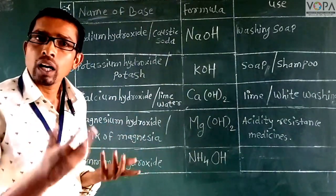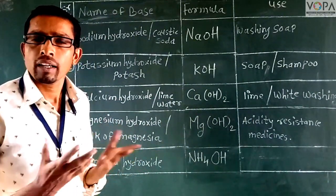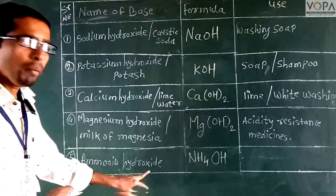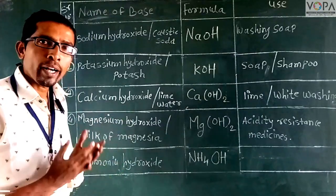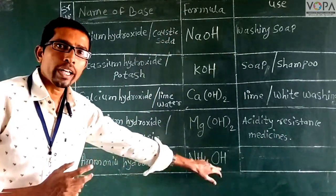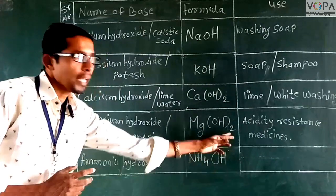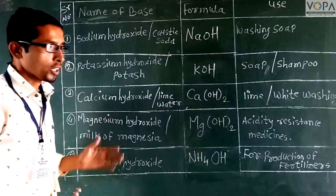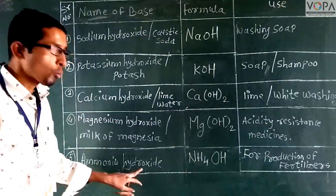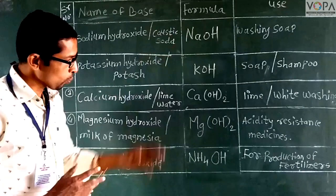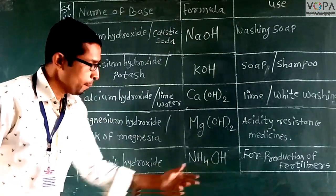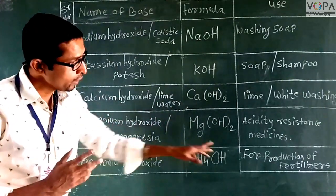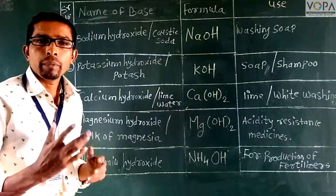Ammonium hydroxide. The formula is NH4OH. NH4OH stands for ammonium hydroxide. The main use of this base is in the production of fertilizers.